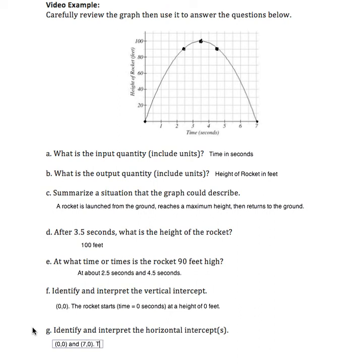This means that at time equals 0, the rocket was in starting position—that's the first horizontal intercept. At time equals 7, it had come back down and hit the ground. So horizontal intercepts, with height of 0, mean that the rocket is on the ground.